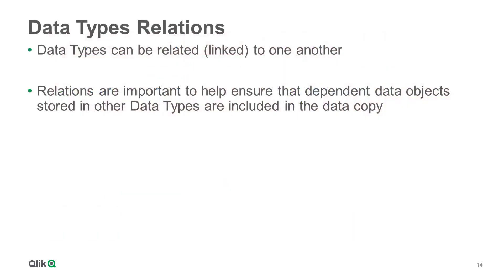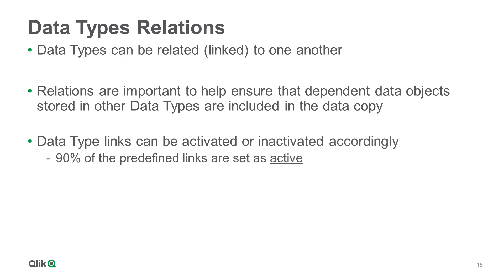It is important to understand that data types can be related to one another. Relations are often necessary to help ensure that the various dependent data objects, which are stored in other data types, are included when performing a data copy. Please be aware that it is possible to activate or inactivate data type links, as there are valid use cases for doing so. Having a link defined as inactive means that the relationship will be excluded from the copy process, while a link defined as active means that the relationship will be included in the copy process.